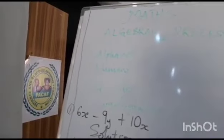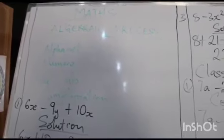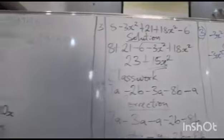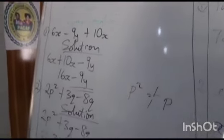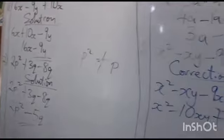Our final answer is 7s squared plus 4s cubed plus 2x raised to power 4. Let me explain how we produced this answer. The original question is: minus 3s squared plus 5s squared plus 6s squared plus 4x cubed plus 2x raised to power 4 minus x squared.